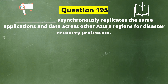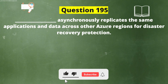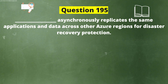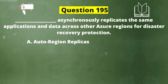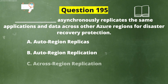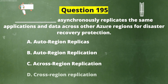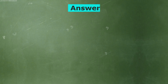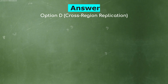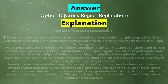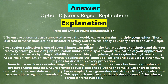Next question: Dash asynchronously replicates the same applications and data across other Azure regions for disaster recovery protection. The options are: A) Auto-region Replicas, B) Auto-region Replication, C) Across Region Replication, D) Cross-region Replication. The correct answer is option D: Cross-region Replication. Explanation from the official Azure documentation: To ensure customers are supported across the world, Azure maintains multiple geographies. These discrete demarcations define a disaster recovery and data residency boundary across one or multiple Azure regions.